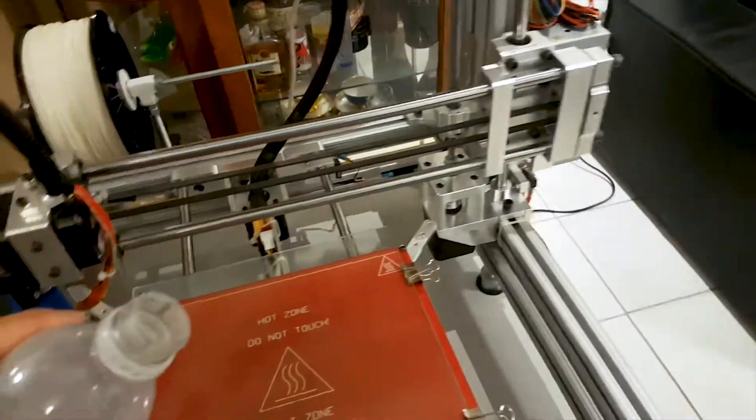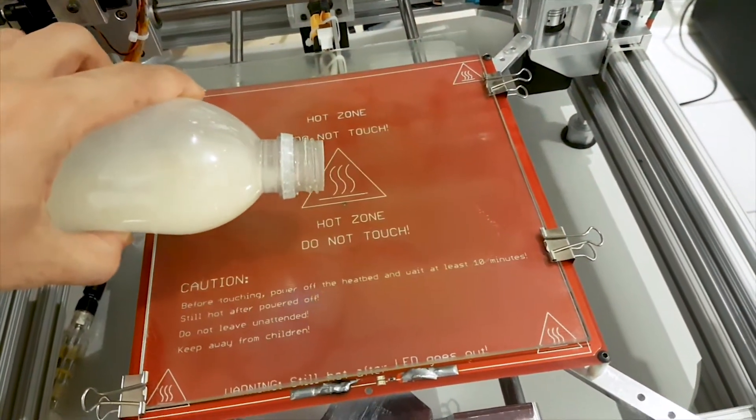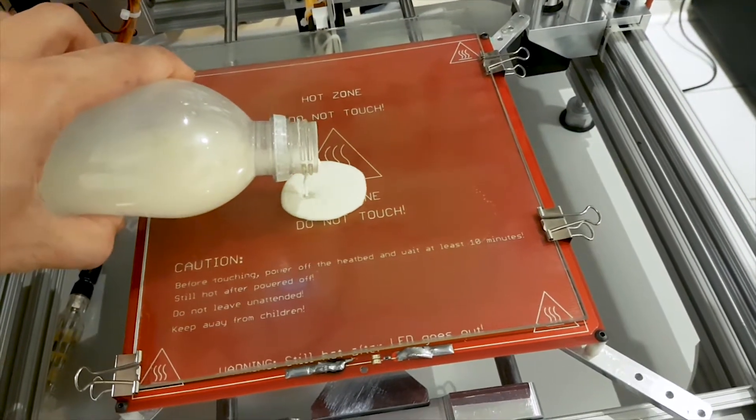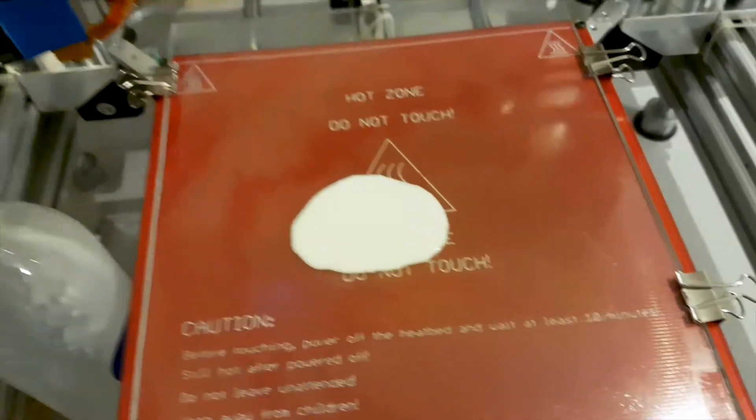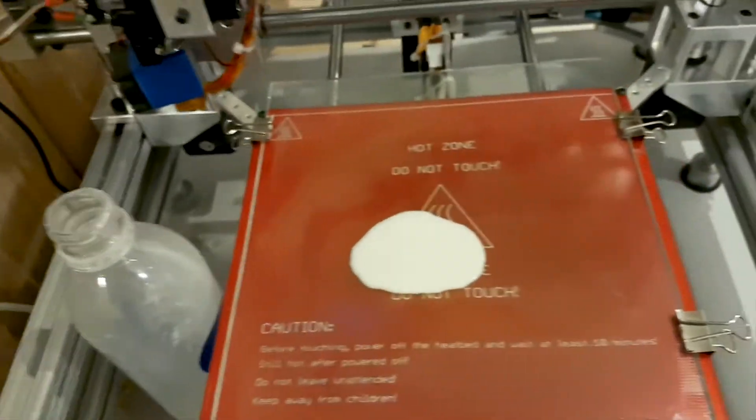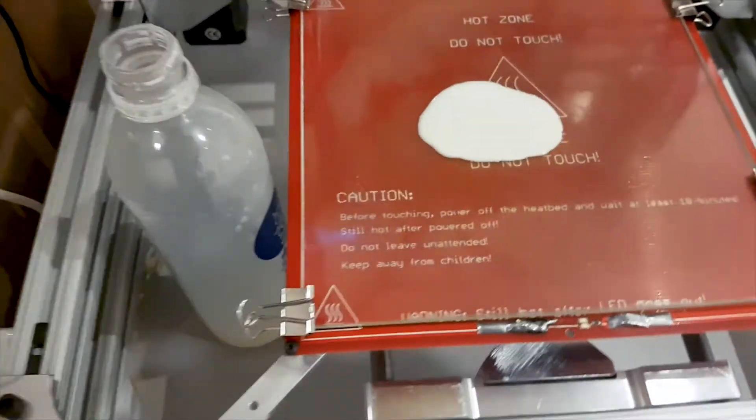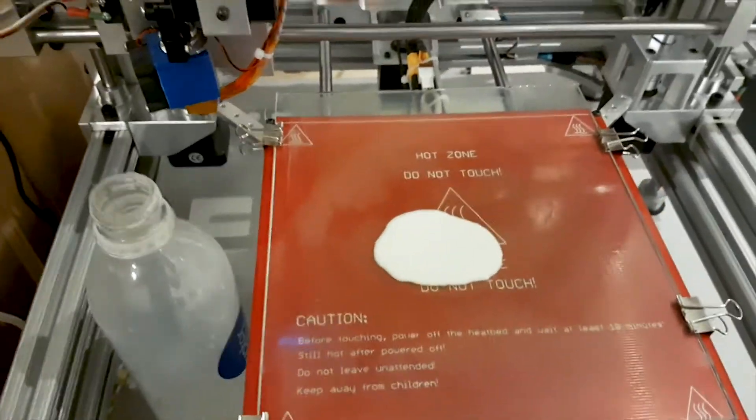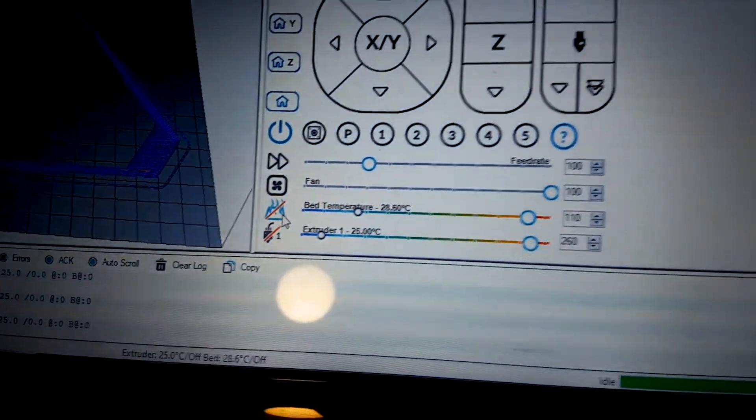Alright, so I diluted it a little bit. I don't want to see the consistency of that wood glue too thick. Then use some straight edges to spread the solution out onto the bed. Right now the bed is very cool, about 30 degrees.